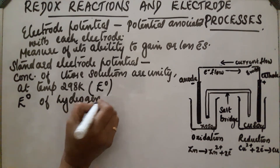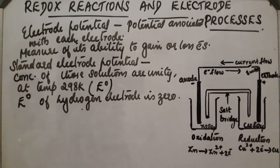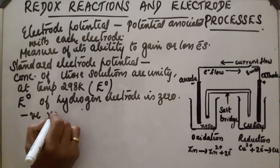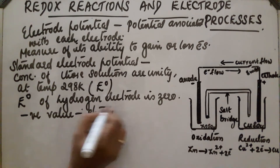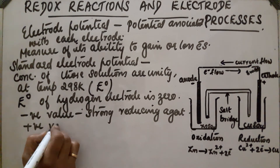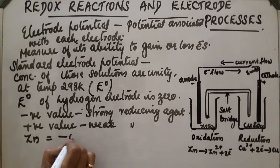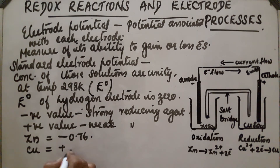By convention, E⁰ of the hydrogen electrode is zero. The standard electrode potential of all other electrodes is measured relative to this hydrogen electrode. A negative value means it is a stronger reducing agent than hydrogen, and a positive value means it is a weaker reducing agent than hydrogen. In the Daniel cell, zinc has E⁰ = −0.76 V and copper has E⁰ = +0.34 V.